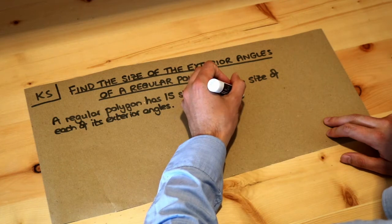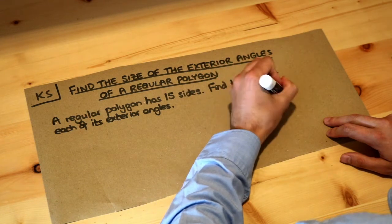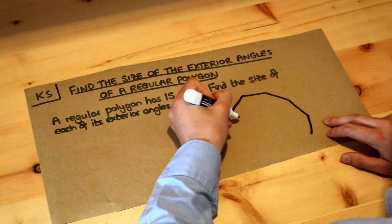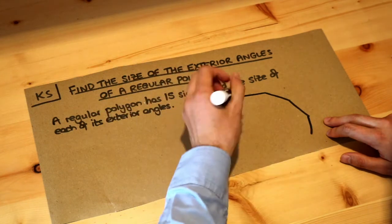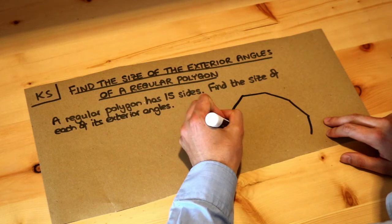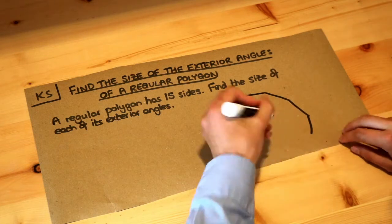Now a 15-sided polygon is going to have lots of sides. I'm not going to try and attempt to draw it exactly, but it's going to have lots of sides and we have a regular polygon so all the sides and angles are going to be the same and it's eventually going to loop around.